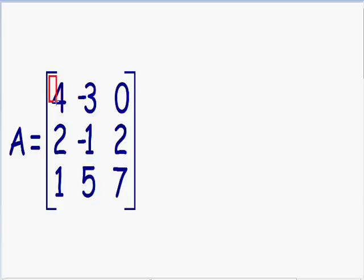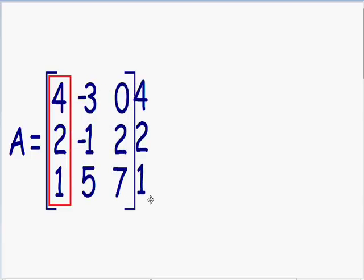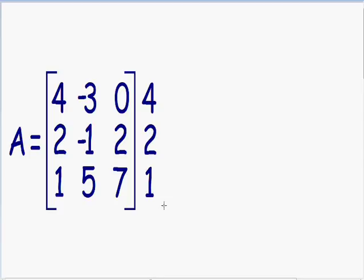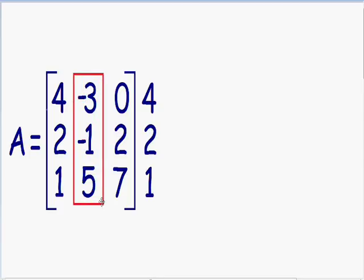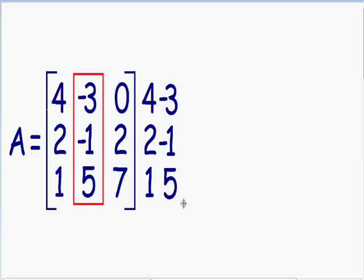I'm going to take this first column, copy it, and place it to the right outside the matrix. And now I'm going to do the exact same thing with the second column — I'm going to copy the second column and place it on the right outside the matrix.